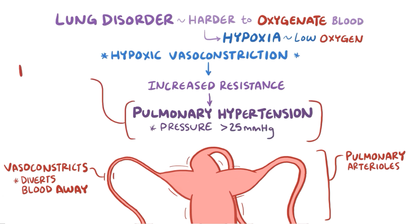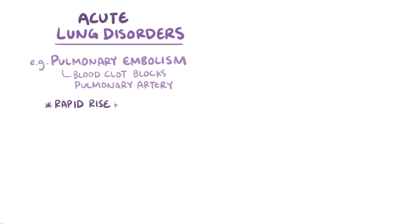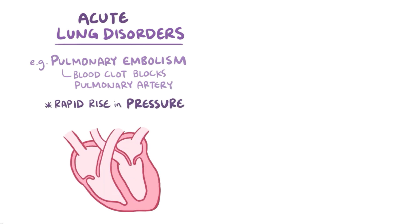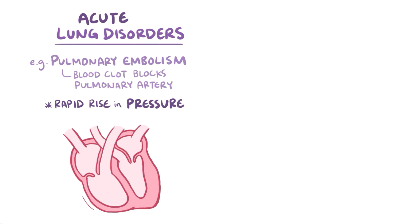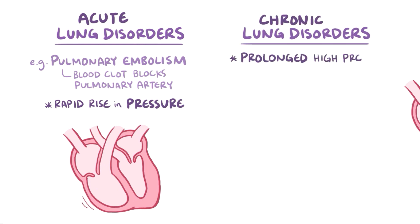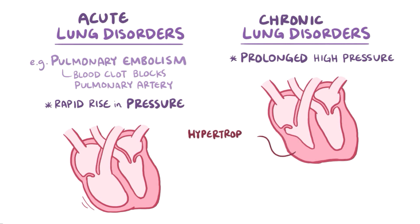The high pulmonary pressure makes it hard for the right ventricle to pump blood into the pulmonary circulation. As compared to the left side, the right side of the heart is thinner-walled and used to ejecting blood against a low pulmonary vascular resistance. In acute lung disorders, like a pulmonary embolism where a blood clot blocks blood flow in a pulmonary artery, the result is a rapid increase in right ventricular pressure that makes the right ventricle stretch out like a water balloon. In chronic lung disorders, prolonged high pressure causes the right ventricle to hypertrophy, or grow, so it can contract with more force.